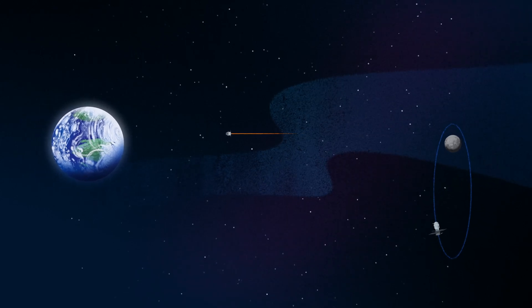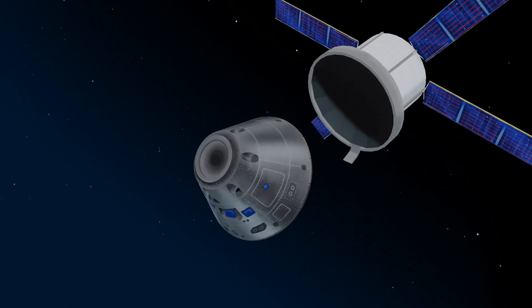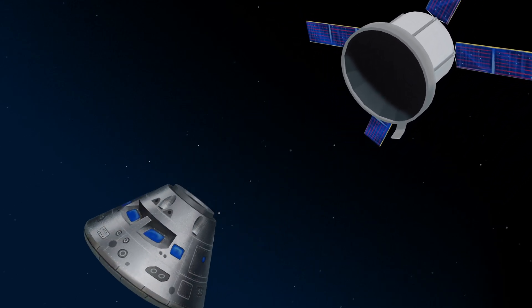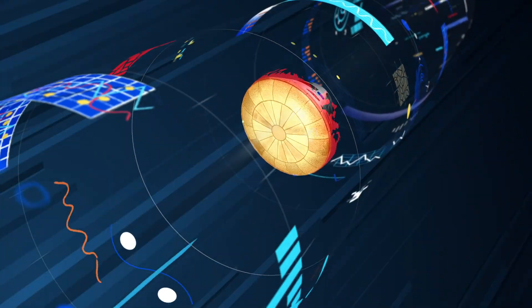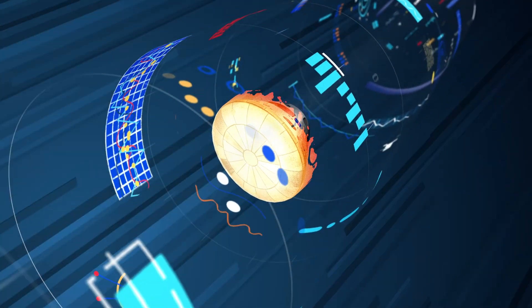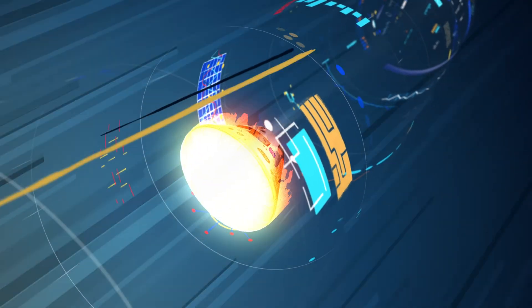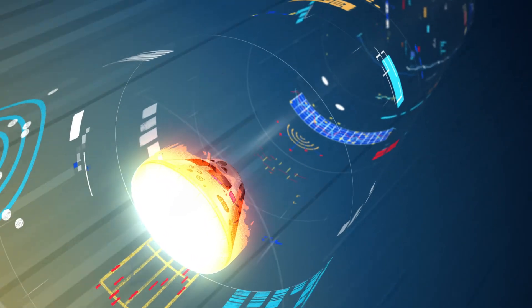As they near the end of this journey, the service module is released, and the crew module is oriented heat shield first. Entering Earth's atmosphere at 25,000 miles per hour, the friction of air slows Orion considerably, while also subjecting it to temperatures of 5,000 degrees.